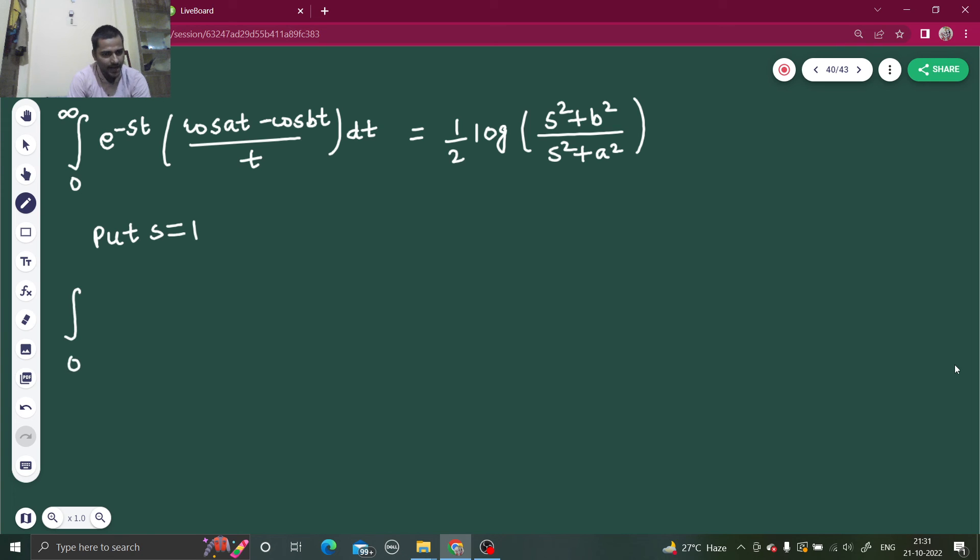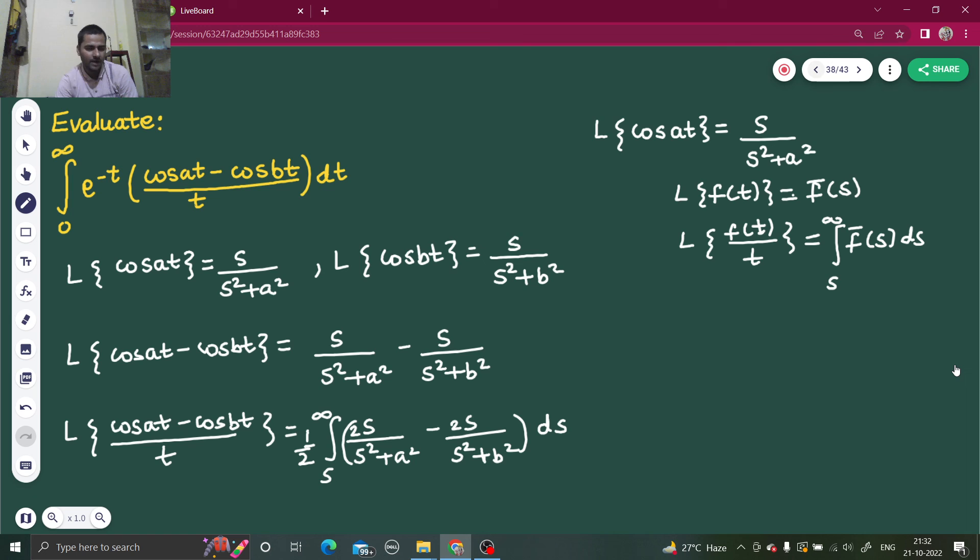So you will get whatever is required in LHS, whatever is demanded is in LHS and that is equal to your RHS. Your question in LHS your answer in RHS. Here put s as 1. So you will get integral 0 to infinity e power minus t cos at minus cos bt by t dt equal to half log 1 plus b square over 1 plus a square.